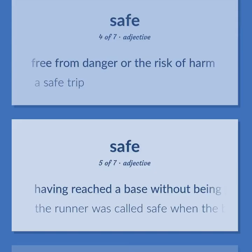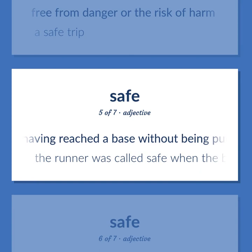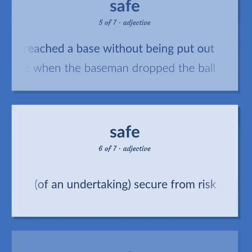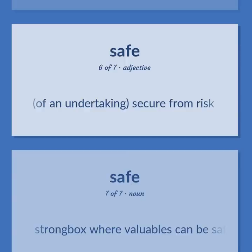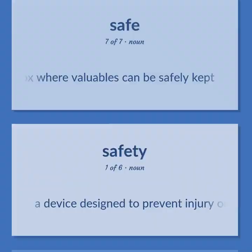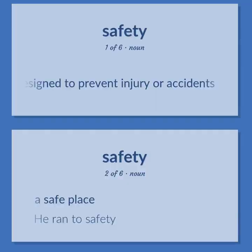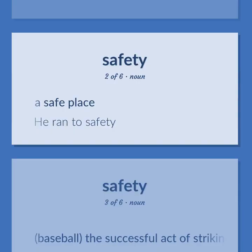Having reached a base without being put out — the runner was called safe when the baseman dropped the ball. Of an undertaking: secure from risk. Strongbox where valuables can be safely kept. A device designed to prevent injury or accidents. A safe place — he ran to safety.